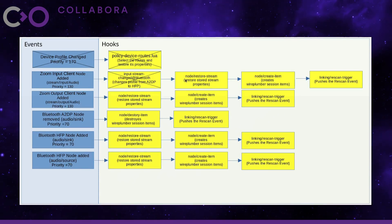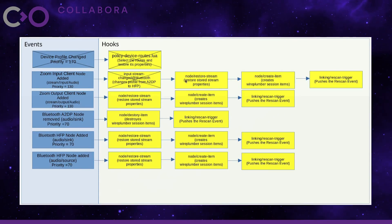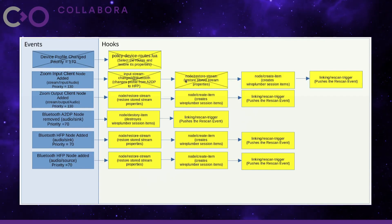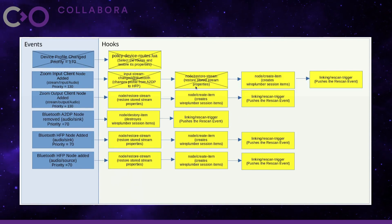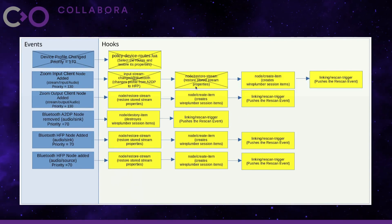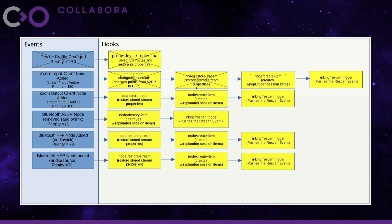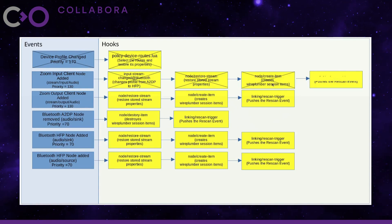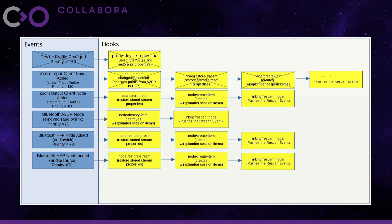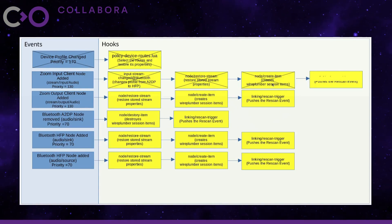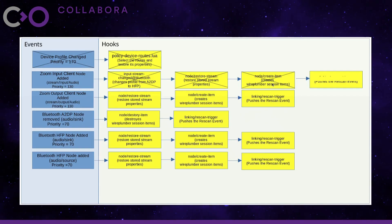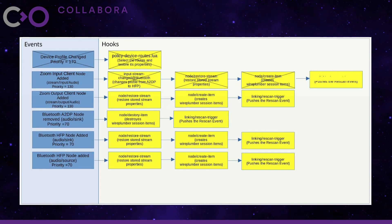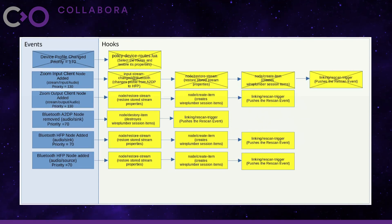Now we have all the needed events, so we resume. Event dispatcher picks the next priority event and hook and resumes execution. It picks the restore stream event — the restore stream hook is responsible for restoring stored known properties like volume, mute, etc. The next hook is create item, which creates the session items out of the nodes. Session items are needed by WirePlumber so that it can link them.